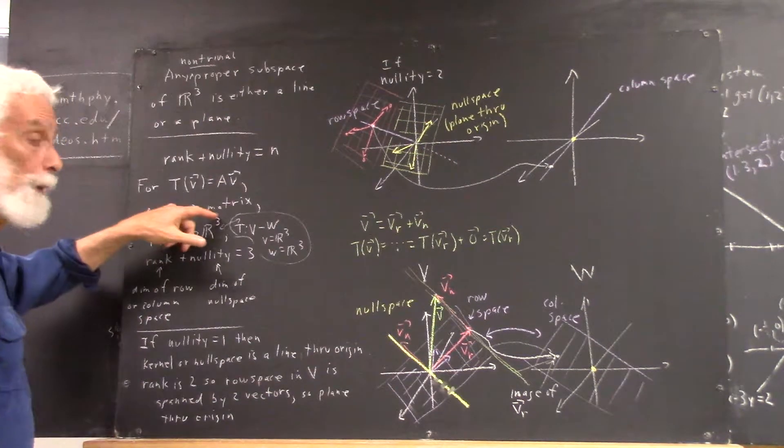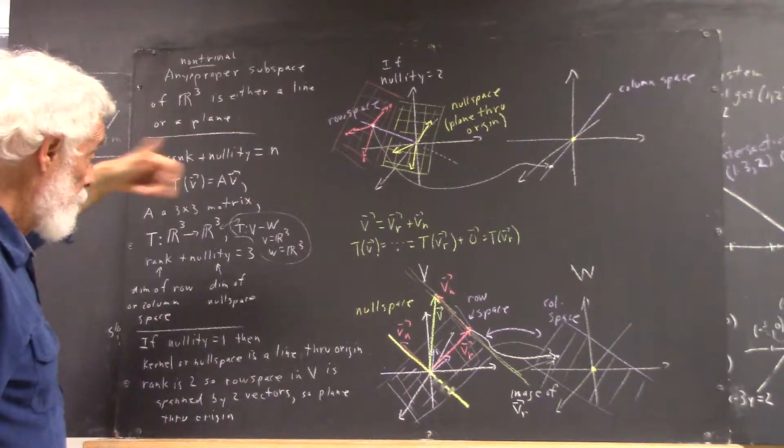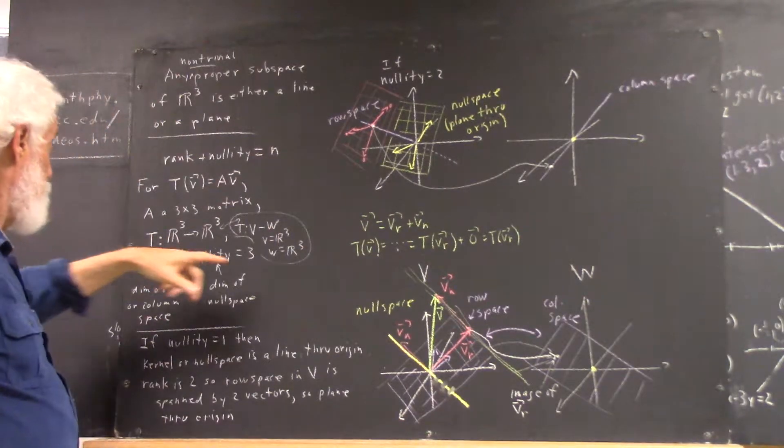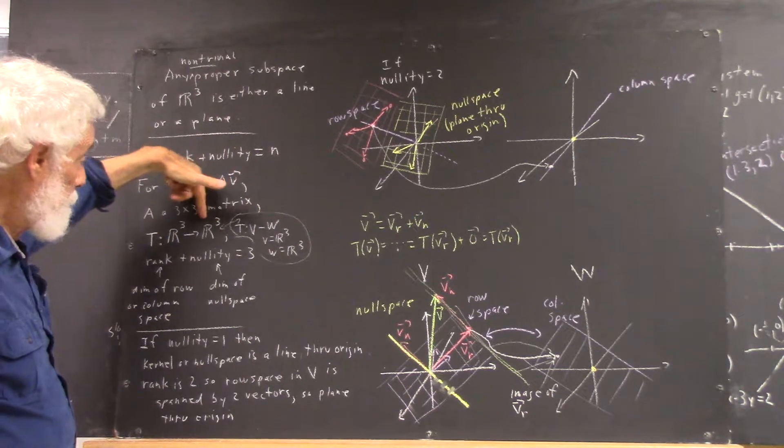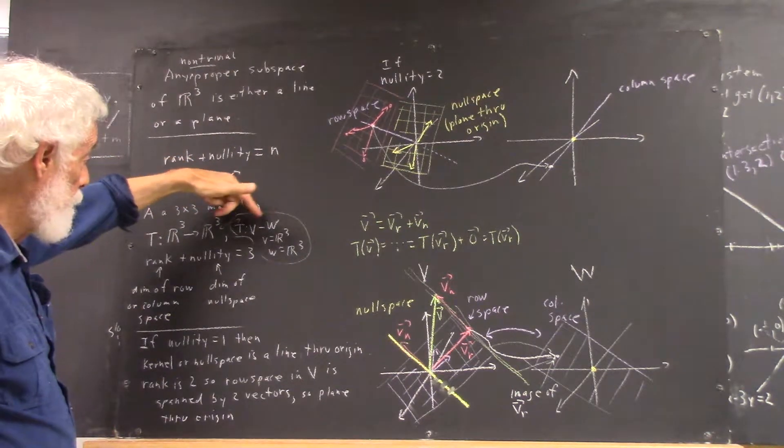If you have a mapping from R3 to R3 defined by some matrix, then your V space would be in R3, your W space would be in R3, it would be a mapping from V to W.